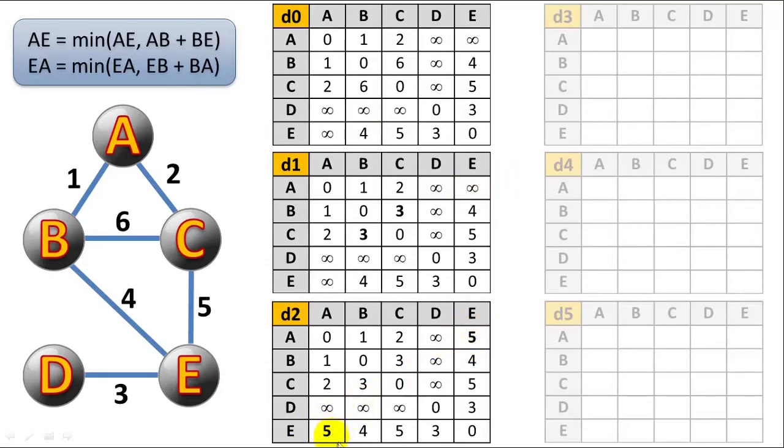And the same thing down here, just the opposite direction. So in iteration two, where we're considering stops at vertex B, we only made two changes to our graph. But we applied this similar formula to every cell in the graph. Those are just the only two that change. And again, always when applying this formula, you're considering the minimum. These are the weights of the previous iteration that we're using to compute the next iteration.